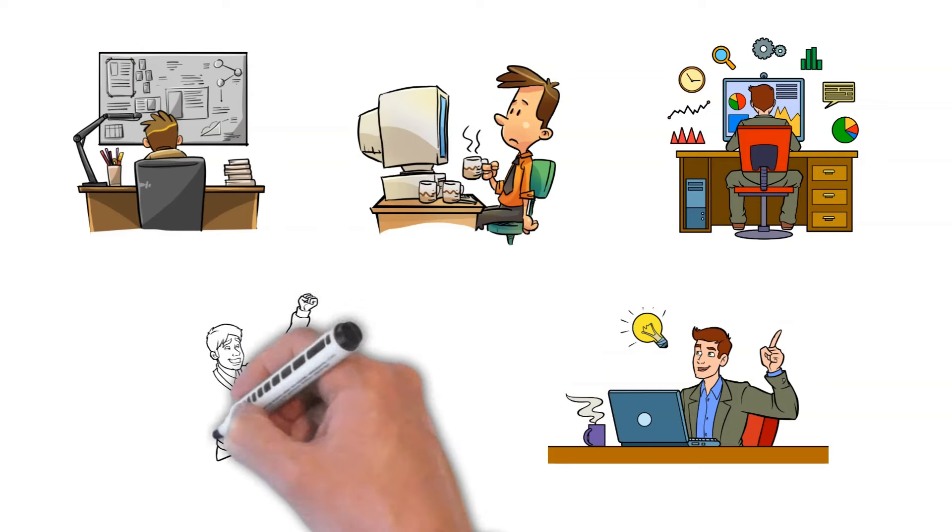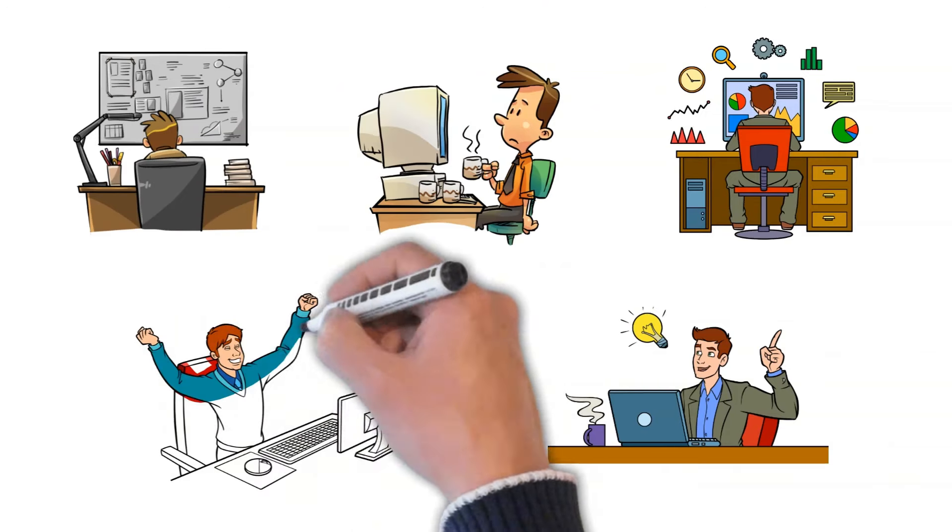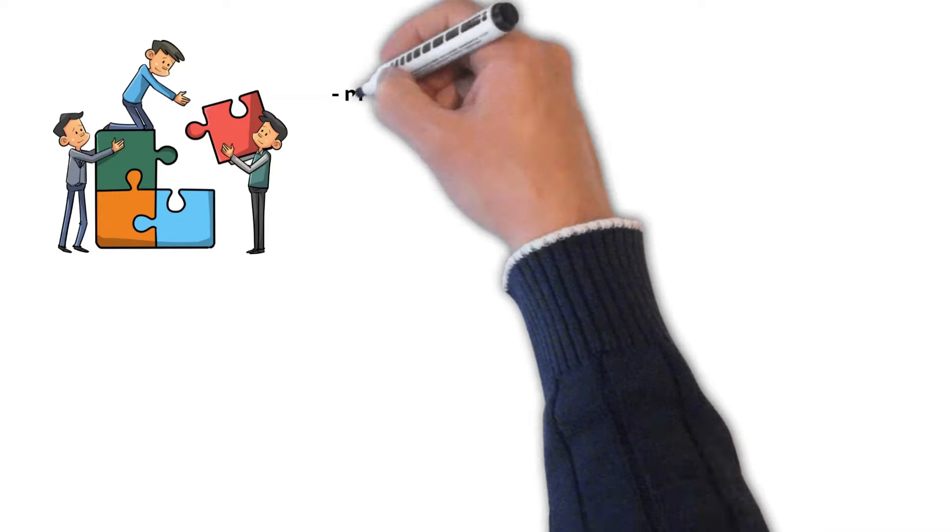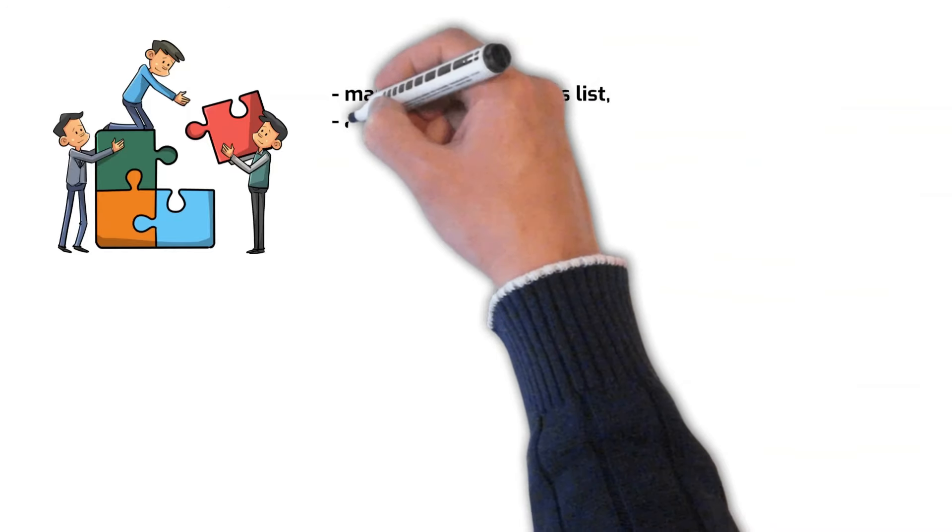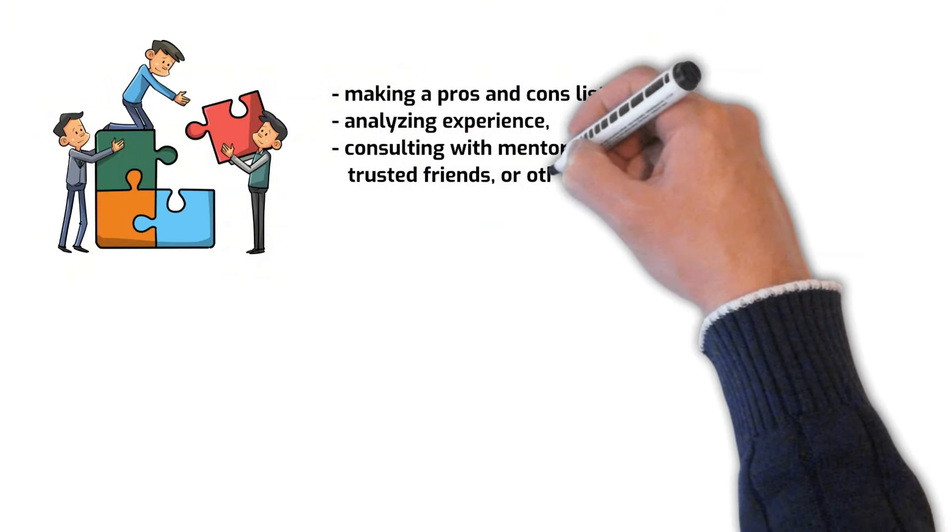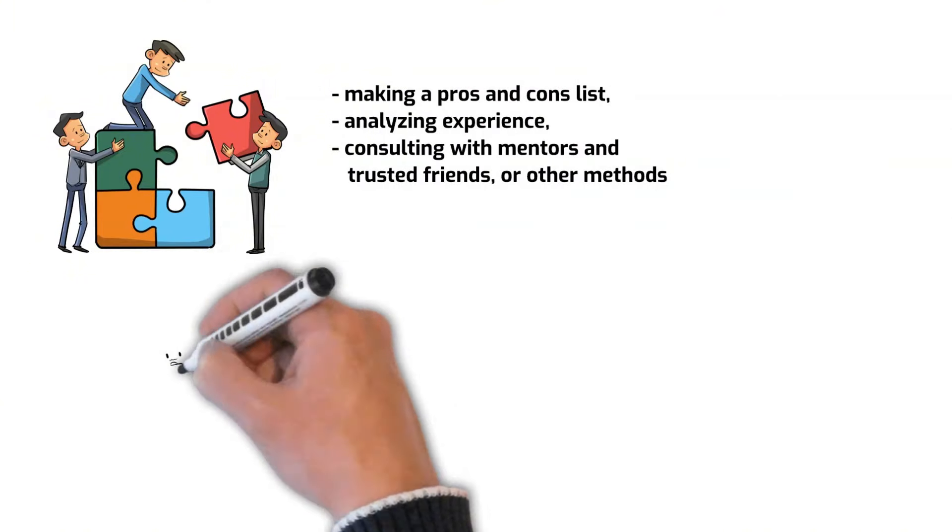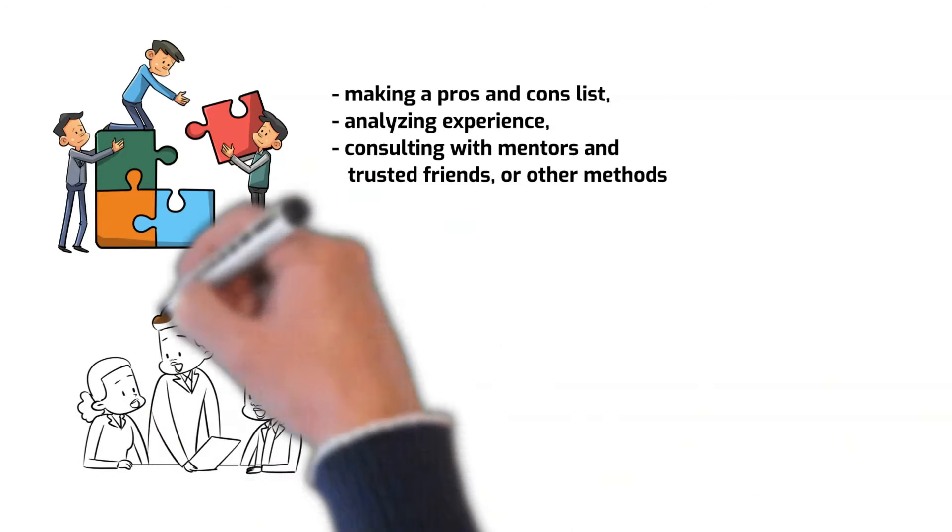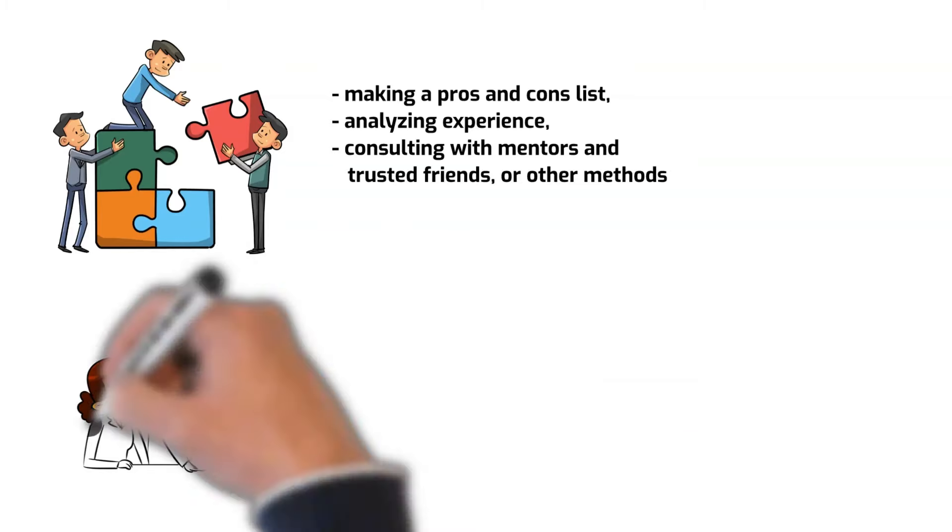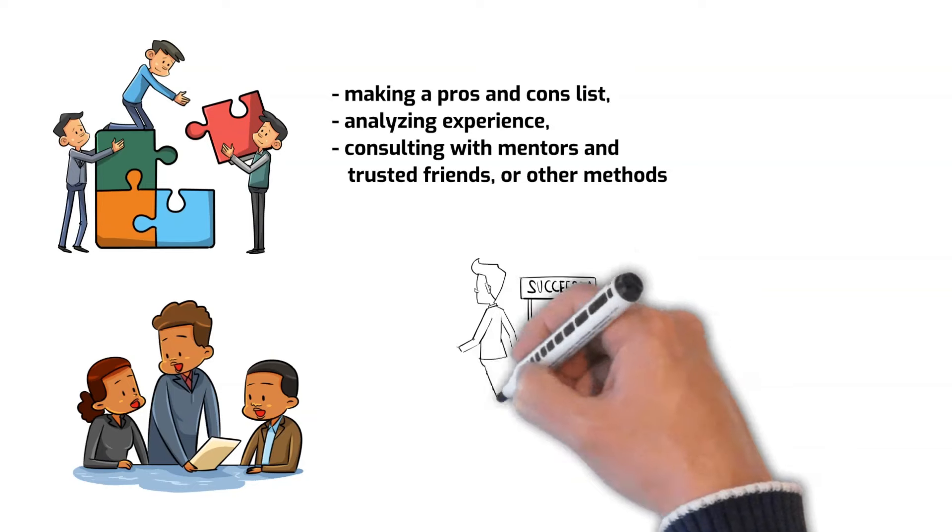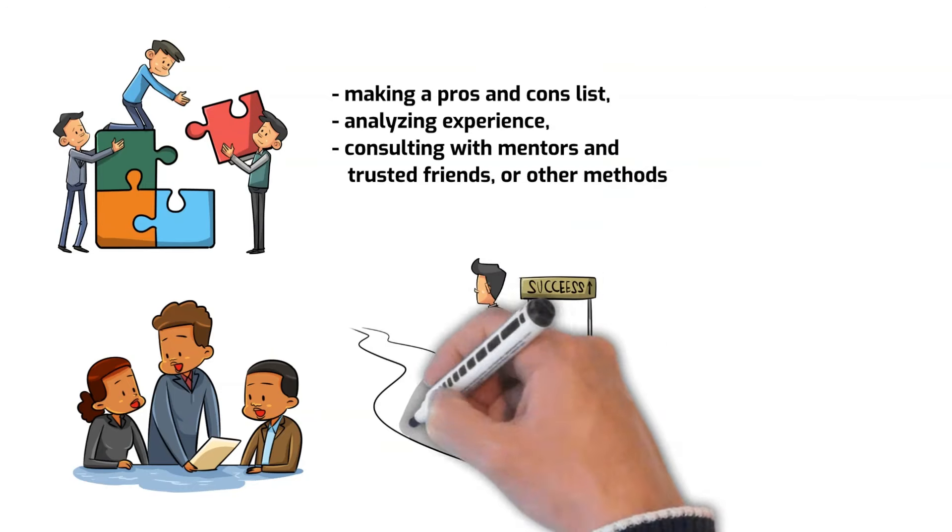Unlike Dalio, you might not be able to develop computer algorithms for life decision making. Still, the underlying principle here is having a systematic approach. This may involve making a pros and cons list, analyzing experience, consulting with mentors and trusted friends, or other methods. The key is to avoid being influenced by emotion or bias and instead make rational, well-considered decisions based on facts and evidence. Doing this will assist you in making great decisions that will spur your business on a profitable path.